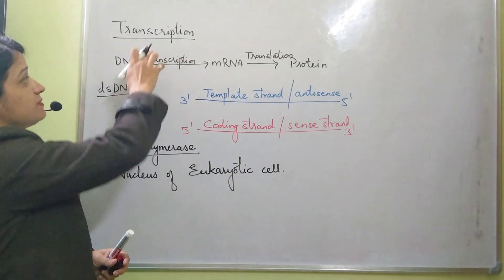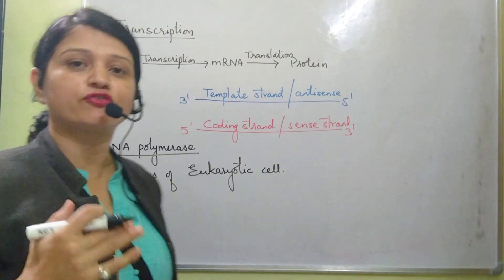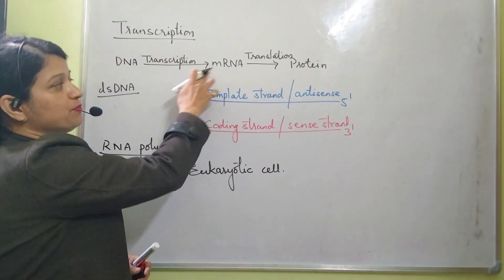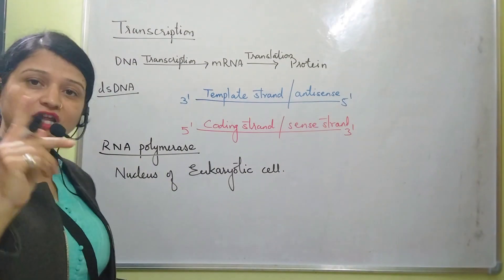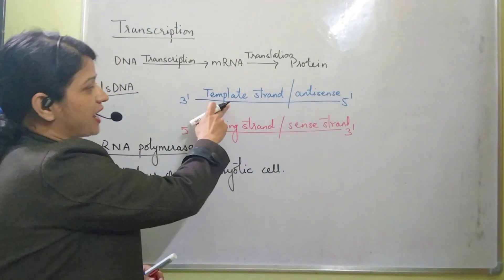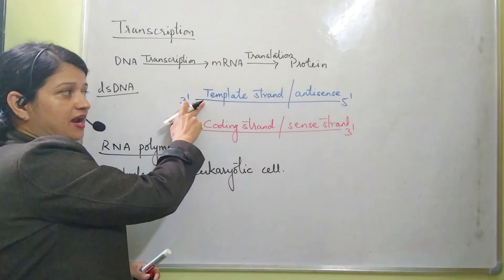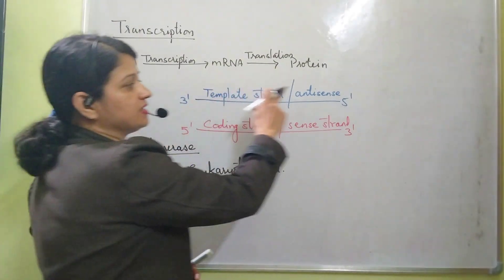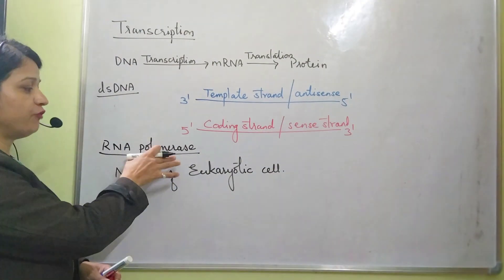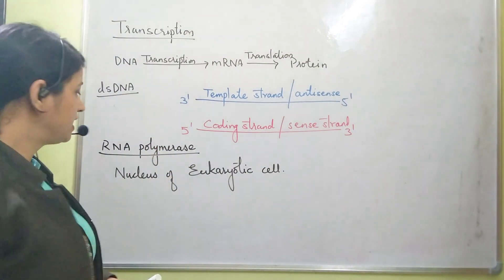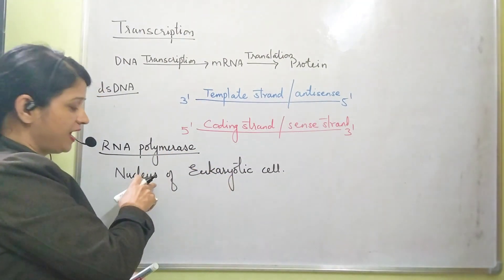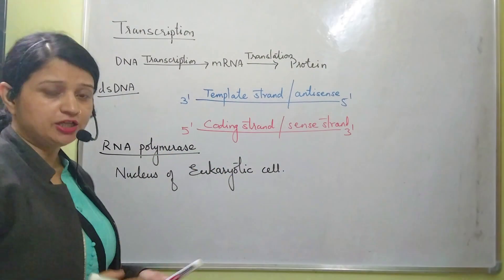Transcription is the process of copying genetic information from one strand into messenger RNA. Only one strand participates — the template strand with polarity 3 prime to 5 prime. The main enzyme is RNA polymerase, and in eukaryotes it takes place in the nucleus.